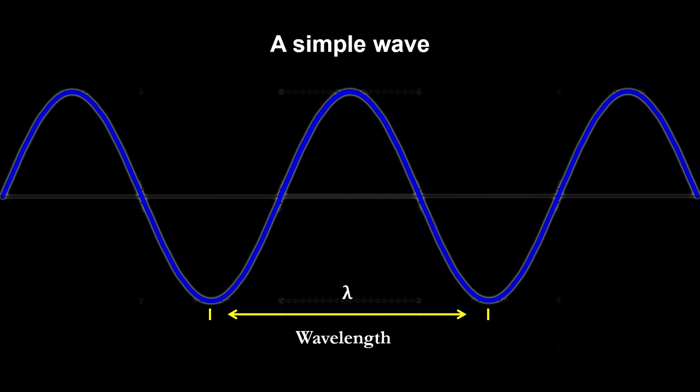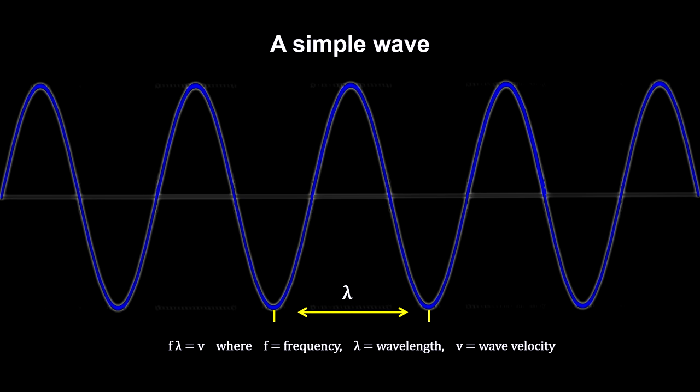For color, we view light as a wave. Here's a simple wave. It has a repeating cycle, a wavelength, and a frequency in cycles per second.